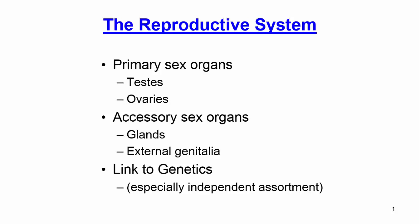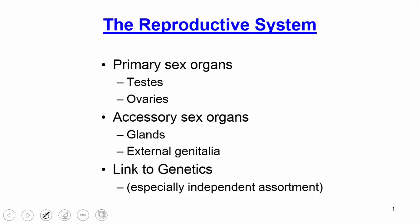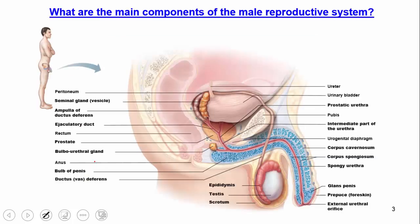In today's lecture, we're going to talk about the reproductive system. We're going to discuss the male and the female. For each of these, we're going to focus on three main components: first the primary sex organs, then the accessory sex organs, and finally we're going to make a link to genetics — specifically something called independent assortment. So let's go ahead and get started.